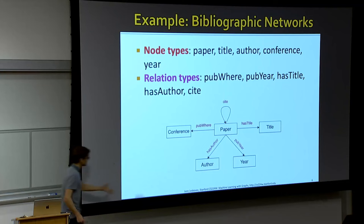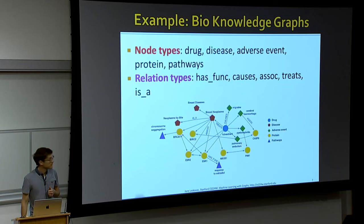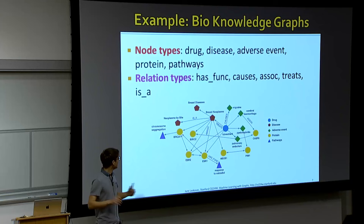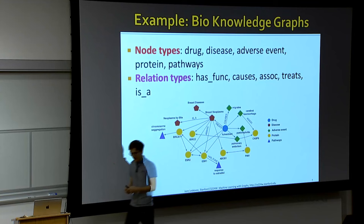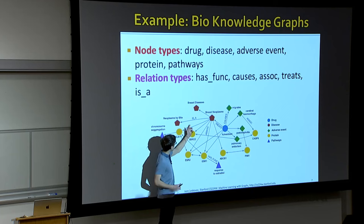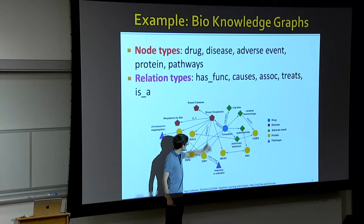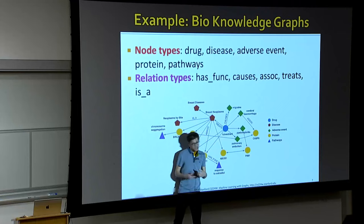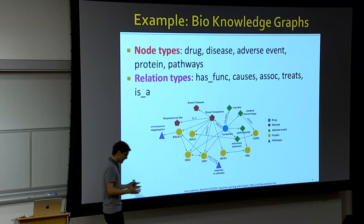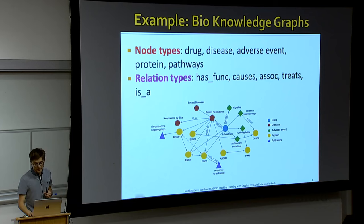Another example that is extremely useful is biomedicine. Here you have many different entities — from drugs to diseases, adverse events, proteins, and pathways — and you want to encode this knowledge in a graphical form. Relations include 'is a' for hierarchical associations, treatments a given drug provides for a disease, and adverse side effects a drug may cause. You can build this knowledge graph scaffold to use as a knowledge base over which you can then reason or learn.